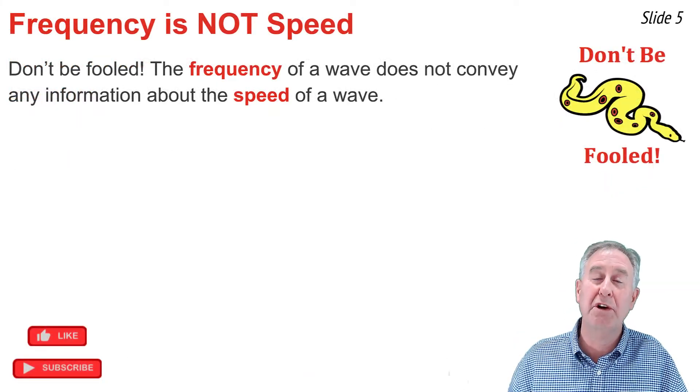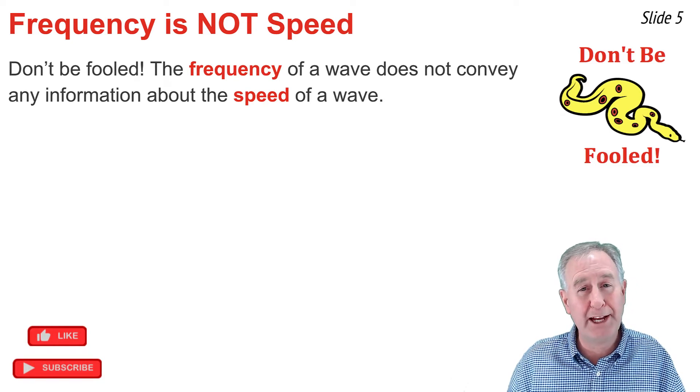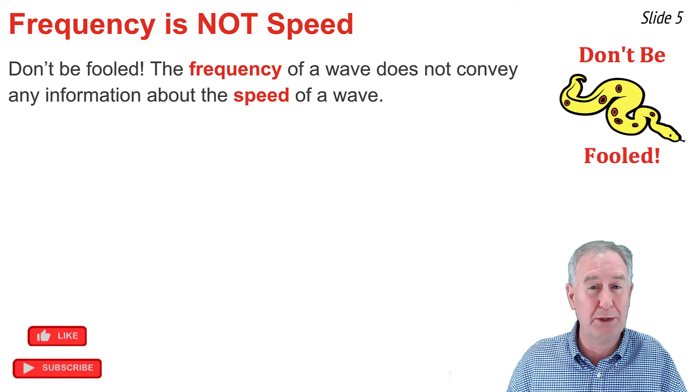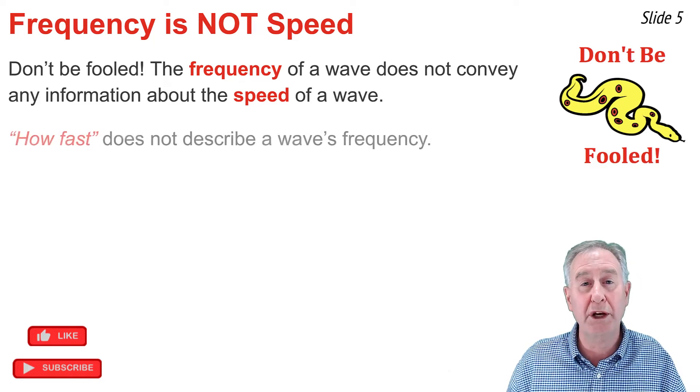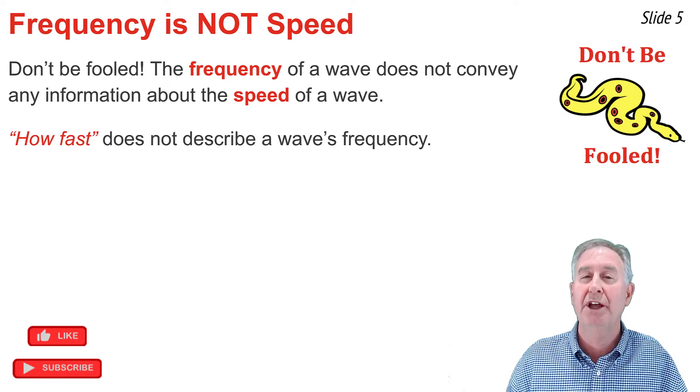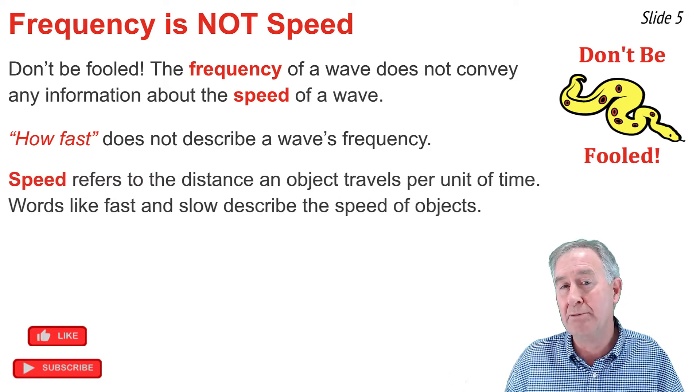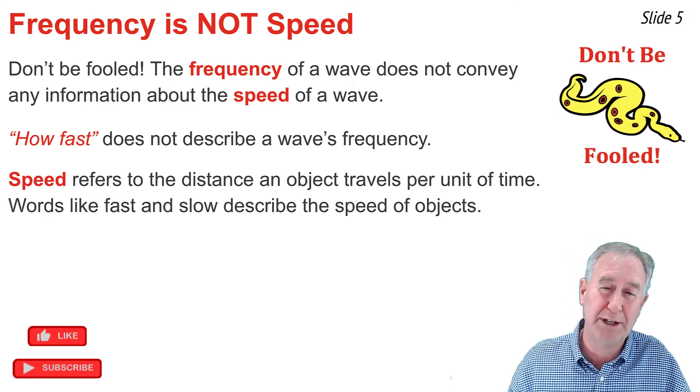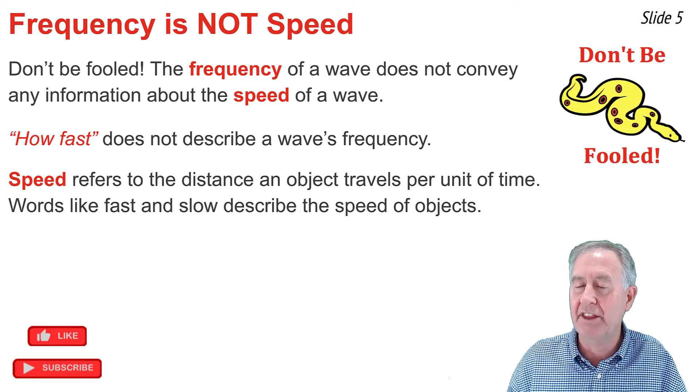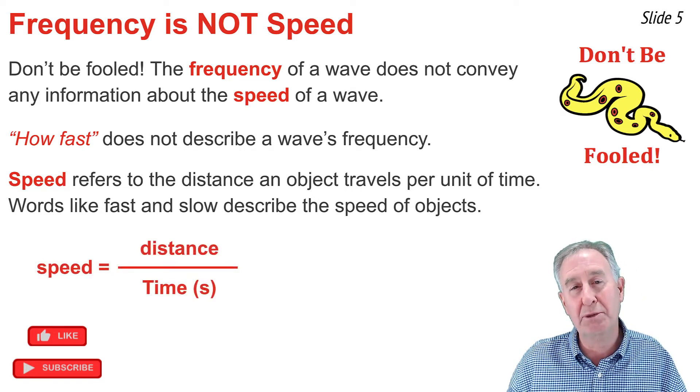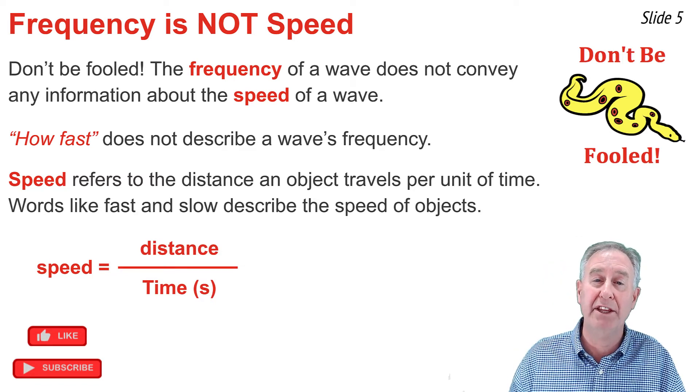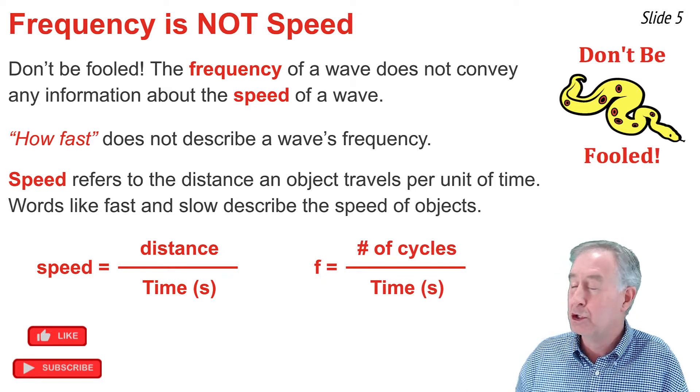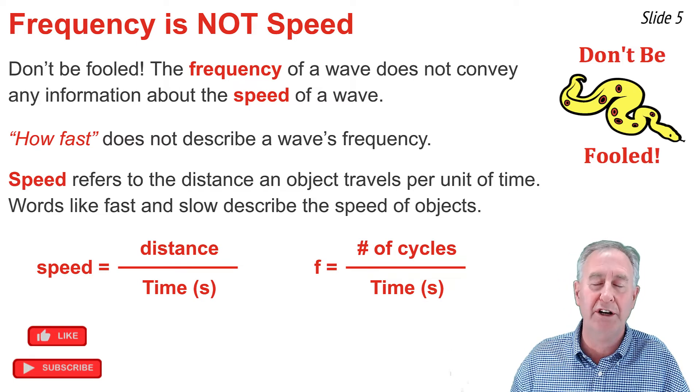The frequency of a wave describes how often particles of the medium vibrate back and forth about their fixed position. But don't be fooled because the frequency of a wave does not describe the speed at which the wave is traveling through the medium, nor does frequency describe how fast a wave is moving. The term speed has to do with the distance an object travels per unit of time. And words like fast and slow describe the speed of a wave or the speed of any object, but it's words like often that describe the frequency. To calculate the speed, you would take the distance traveled and divide it by the time. To calculate the frequency, you take the number of cycles occurring and divide it by the time. Sure, both equations have time in the denominator, but their numerators are different.